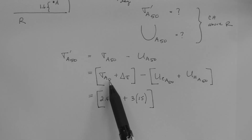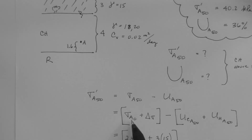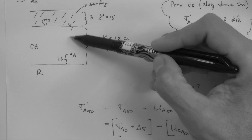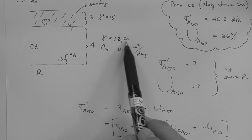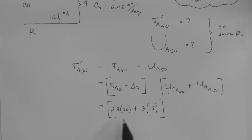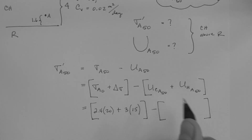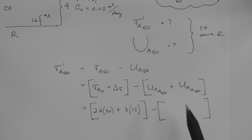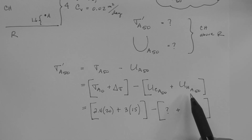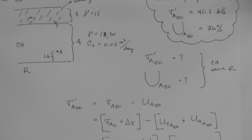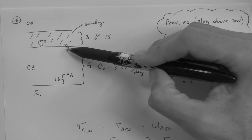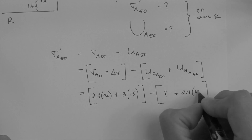The total stress at time equals zero at point A is 2.4 meters times the saturated unit weight of 20. The load is the height of the fill times the unit weight of the fill: 3 times 15, which is 45 kPa. The excess pore pressure at point A at 50 days is what we'll find using the chart. The hydrostatic pore pressure at point A is simply the pressure head: 2.4 meters times the unit weight of water, assumed to be 10 kN per meter cubed.